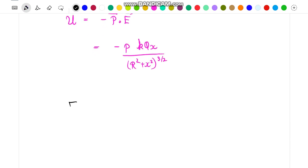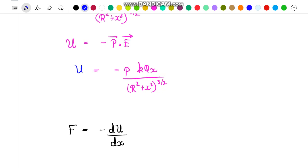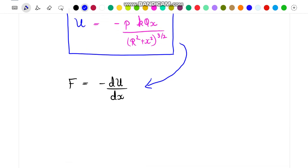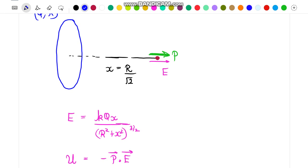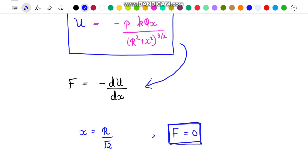Further we know that in order to calculate force we can make use of this expression, that is f equal to minus u by dx. So differentiating this given expression of potential with respect to x and further putting the value of x equal to r by root 2 as it was mentioned to us in the problem, we finally get the value of f to be equal to 0 which is our final desired result.